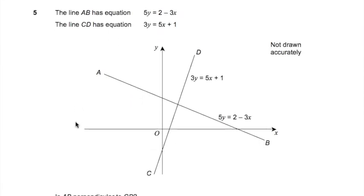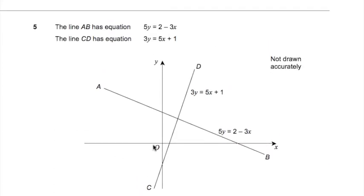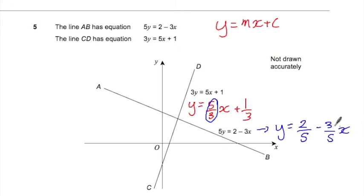Question 5. Line AB has equation 5Y equals 2 minus 3X. Line CD has equation 3Y equals 5X plus 1. Is AB perpendicular to CD? You must show your working. Okay, so what I'm thinking here is, well, let's find the gradient of both these lines to start with. So we need to get it in the form Y equals MX plus C, which neither of these equations are at the moment. They're all mixed up. So to get Y on its own here, we could divide by 3. So we get 5 over 3X plus 1 third. So what we're interested in is that gradient, the number before the X, which is 5 thirds. So for this one, we're going to have to divide by 5. So we'll have Y equals 2 over 5 minus 3 over 5X. And then the gradient here is minus 3 fifths.